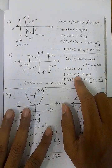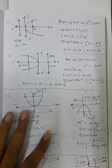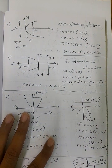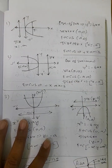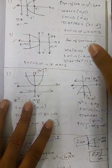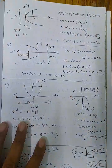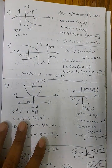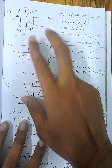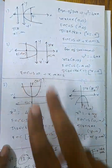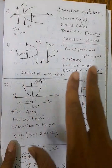Welcome students. We will see CPSI 11th, exercise 11.2, 7th question. There are 4 types of parabolas: the right side parabola, the left side parabola, the upward parabola, and the downward parabola. What are the formulas?